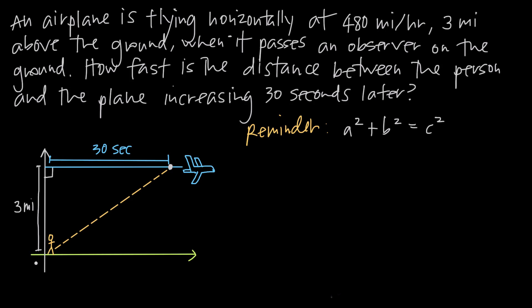This 3 mile side is never going to change because the plane is flying perfectly horizontally. But this 30 second distance will change as the plane continues to fly — this leg will continue to get longer and longer, and so will the distance between the observer and the airplane. So this leg and the hypotenuse will continue to increase in length.